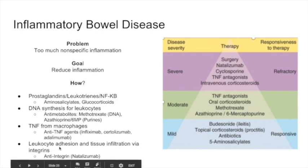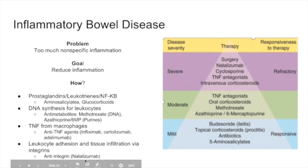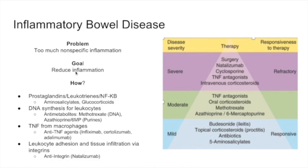Lastly, which is last-line in pharmacotherapy, is natalizumab — an anti-integrin. You'll remember in leukocyte migration how cells adhere via integrins; natalizumab blocks those integrins. That's the final step in how we reduce inflammation in IBD. If pharmacotherapy is not sufficient, you can go to surgical therapy and remove the diseased part of the bowel.